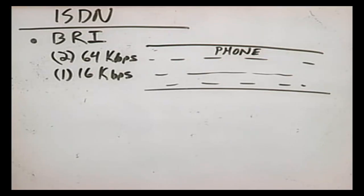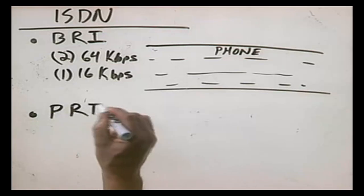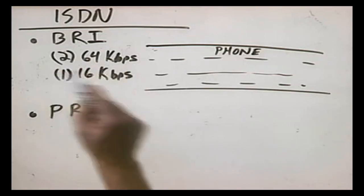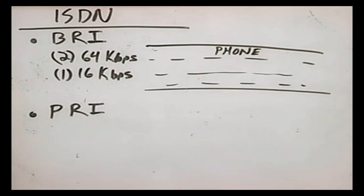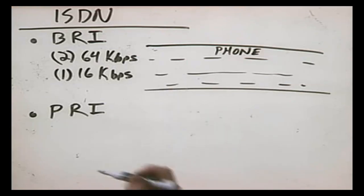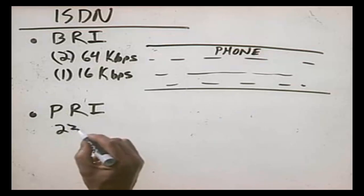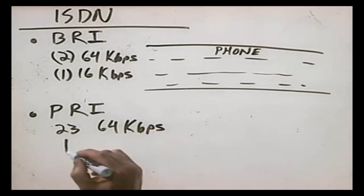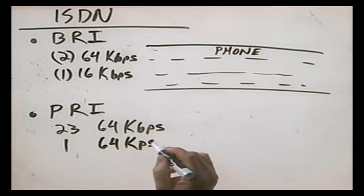There's a second interface called the Primary Rate Interface. Just like with BRI, we take the phone line and divide it into channels. However, PRI provides a lot more data channels — more than your regular phone line can handle, so you actually have to have special wiring installed. With PRI, we have up to 23 64-kilobit per second data channels and one 64 kilobit per second control channel. In the United States, ISDN isn't that widely implemented — anywhere you can get ISDN you can also get DSL, which provides more bandwidth. However, in Europe ISDN is very popular, so if you're working with Europeans, you're likely going to be dealing with an ISDN connection.